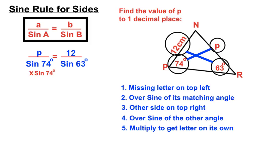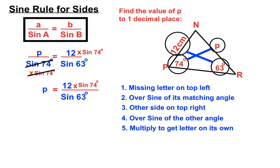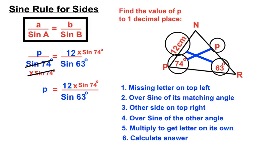To move it we do the opposite — we multiply both sides by sine 74. On the left-hand side, the dividing sine 74 and the multiplying sine 74 cancel each other out, leaving P on its own. On the right-hand side we calculate: 12 times sine 74 over sine 63. We put that straight into our calculator and get 12.9. We were working with centimetres in the triangle, so the answer is 12.9 centimetres, rounded to one decimal place.